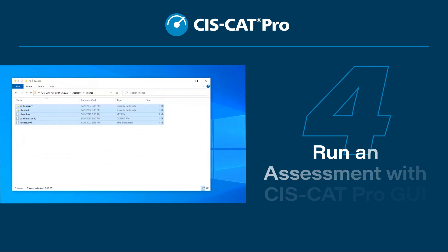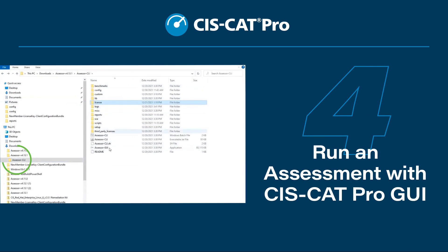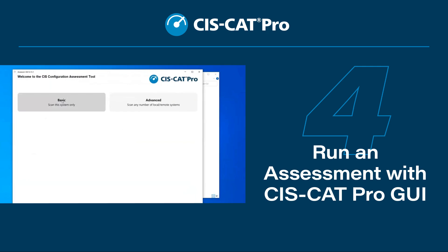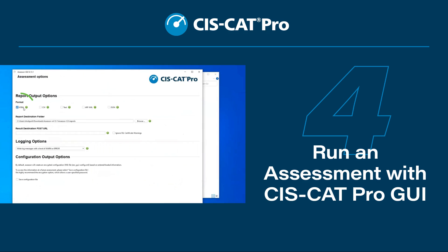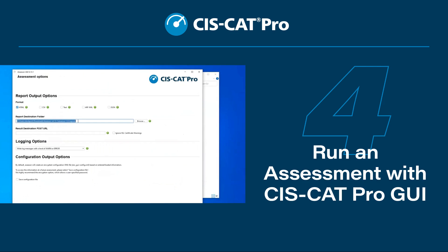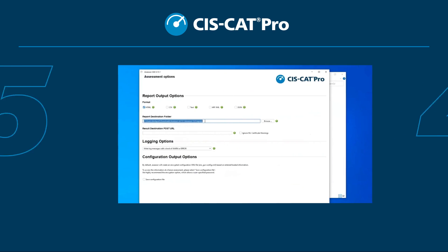Step 4: Run an assessment with SysCat Pro GUI. Execute the GUI.exe as an admin user and choose a benchmark and level for your scan. Select HTML report output before starting your scan.